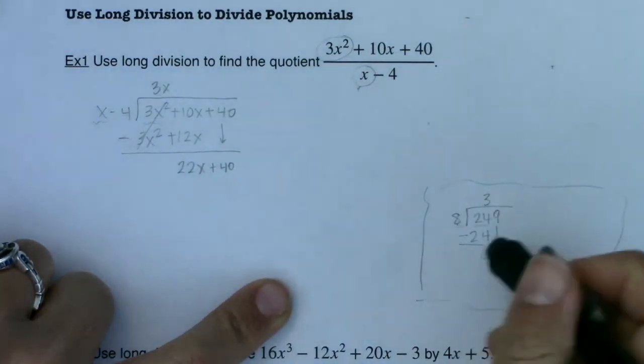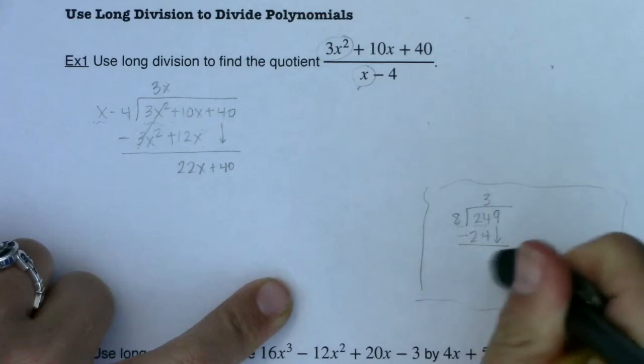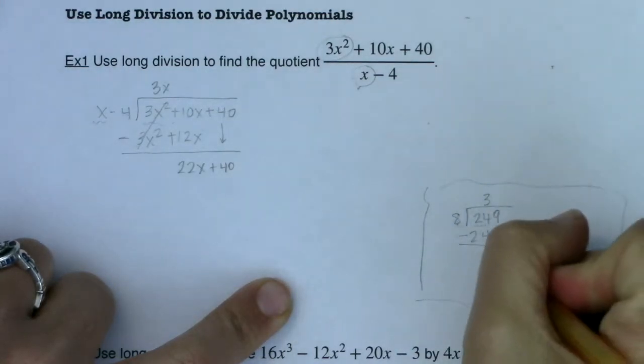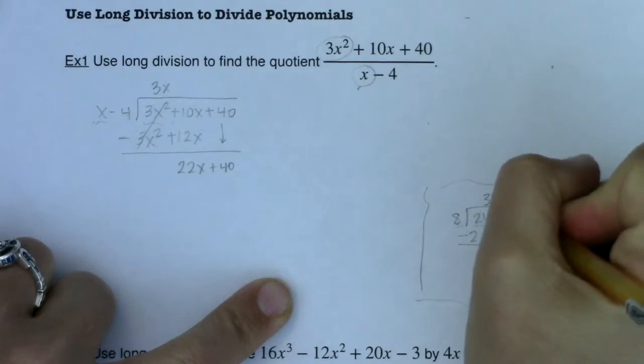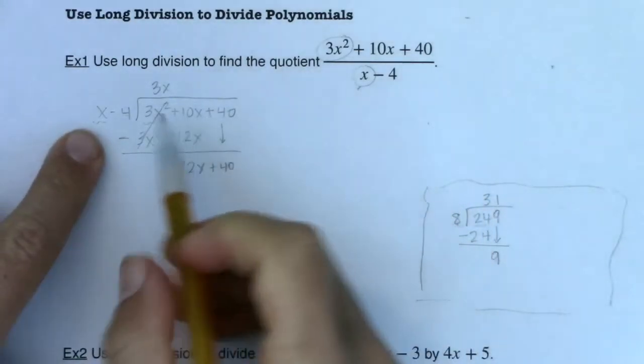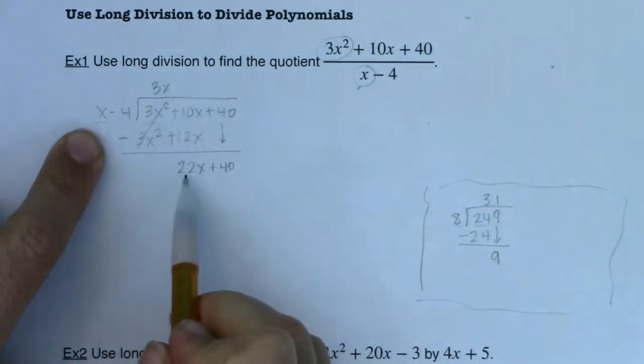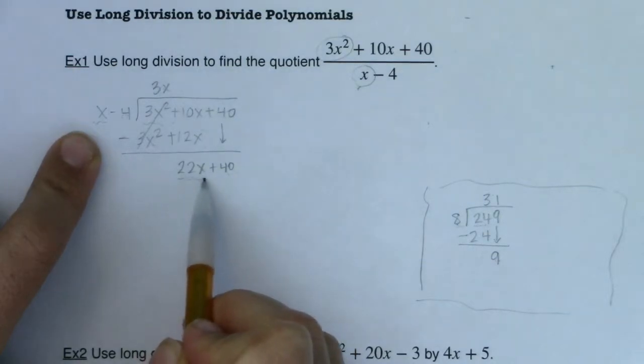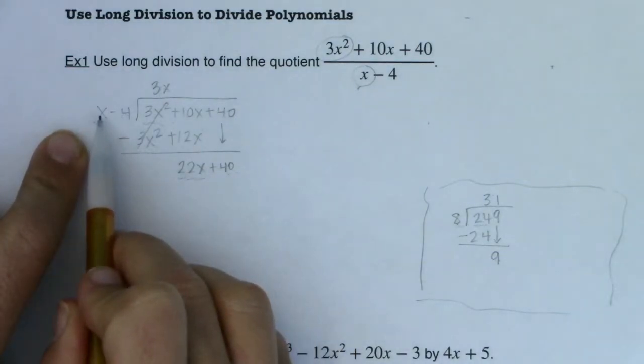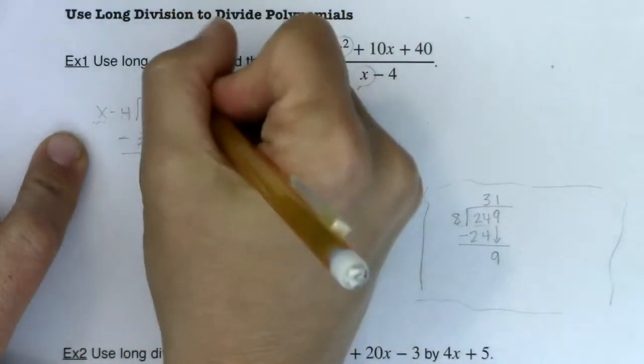So I usually wouldn't write 0, 9. We'd just write 9. What does, how many times does 8 go into 9? Just the one time. So here we go again. Now I have x minus 4 and my new binomial, my new polynomial or binomial specifically is 22x plus 40. And again, I only care about the lead term. What do I need to multiply x by to get to 22x? Well, that is 22.